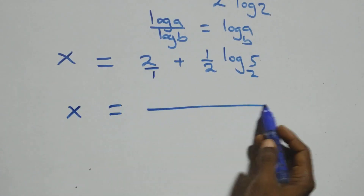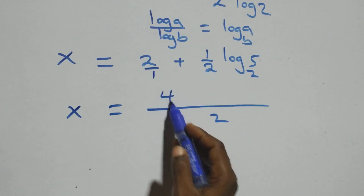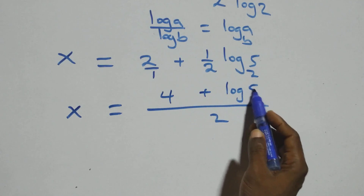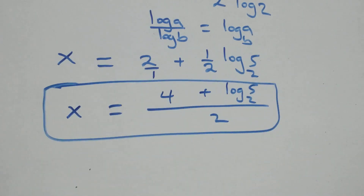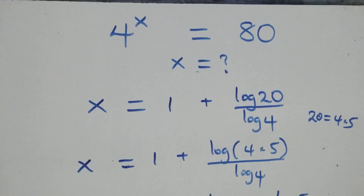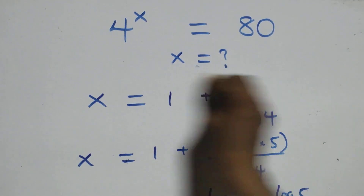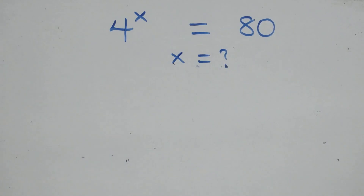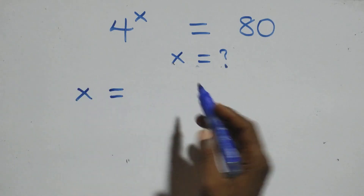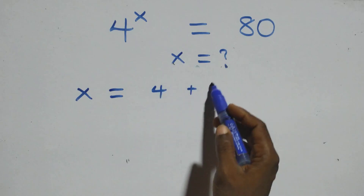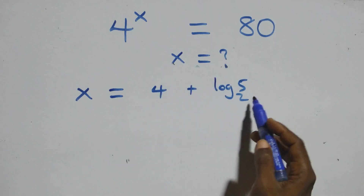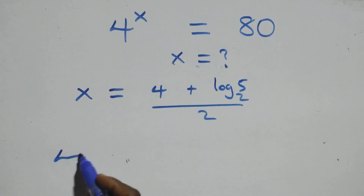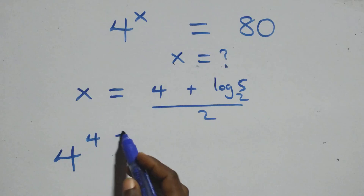This becomes x equals to 2 plus log 5 base 2 over 2, which is the same as x equals to (4 plus log 5 base 2) all over 2. Now let's check if this satisfies the given problem. We substitute the value of x, which is (4 plus log 5 base 2) over 2.